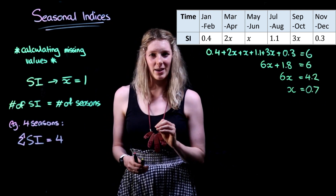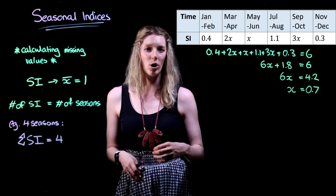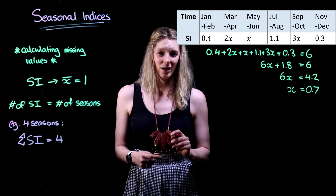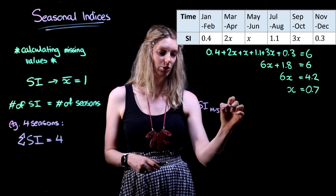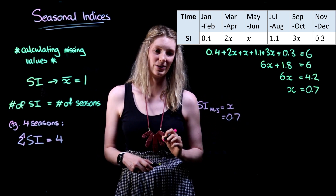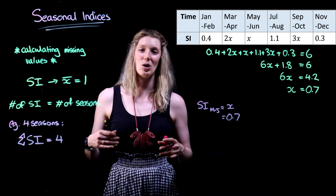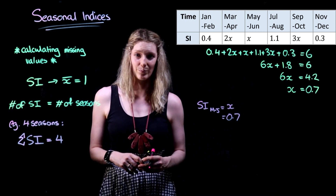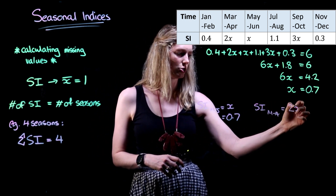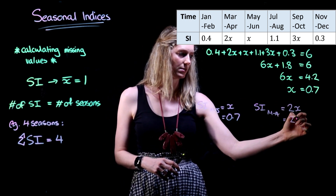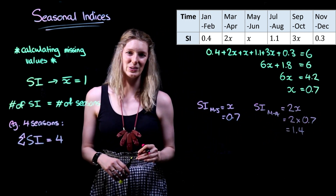We've found our unknown variable x, however we haven't finished yet — we still need to establish what our three unknown seasonal indices are. May to June is our easiest one, because that's just the same as x, which is going to be 0.7. For the others, we need to manipulate this x value. The seasonal index for March to April is 2x, so we take 0.7 and multiply it by 2, giving a final seasonal index of 1.4.